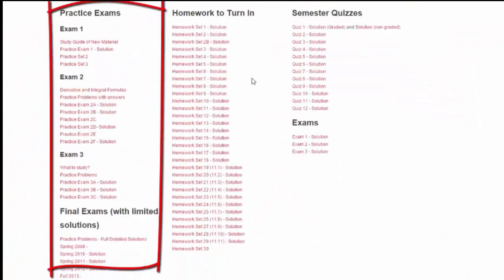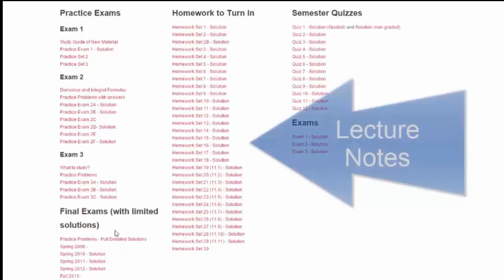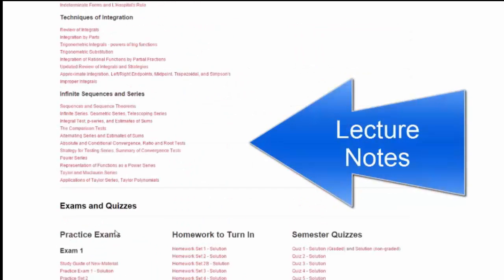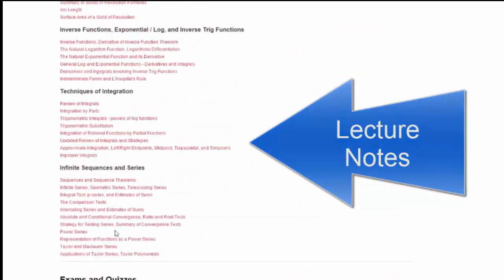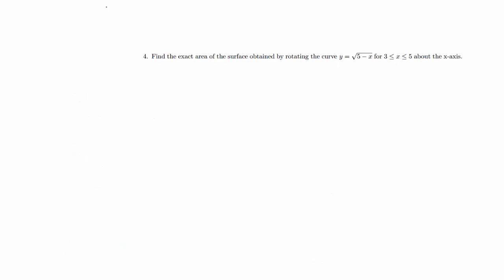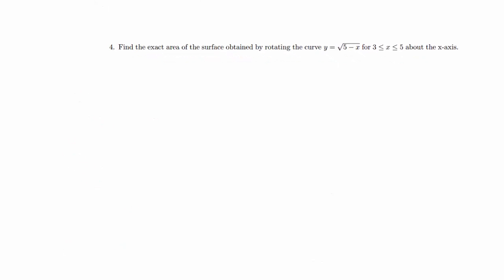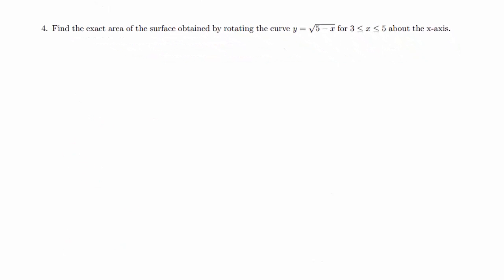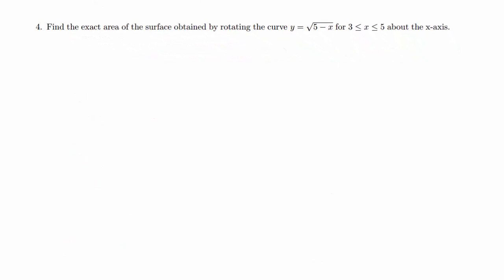You will see all of my practice exams, old finals, solutions, and if you scroll up a little bit more, you will have all my lecture notes. Now with that said, let's get started. Find the exact area of the surface obtained by rotating the curve y equals root of 5 minus x from 3 to 5 about the x-axis.